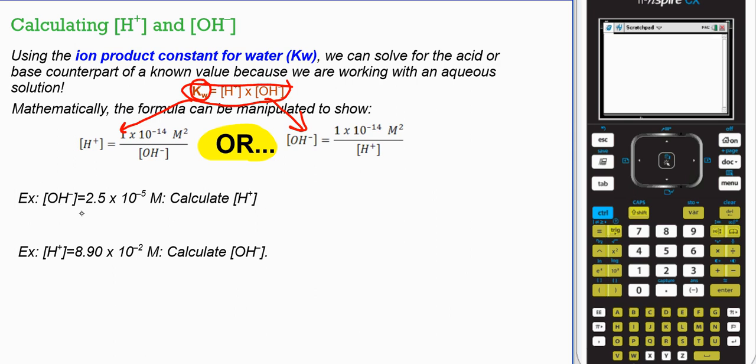Find the hydroxide ion concentration of a solution is 2.5 times 10 negative 5. Calculate hydrogen ion concentration. So we've been given a value for hydroxide ion concentration. So we have this and we need to find this guy. So what we're going to do is do Kw divided by the hydroxide gives hydrogen.